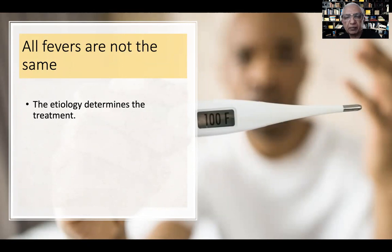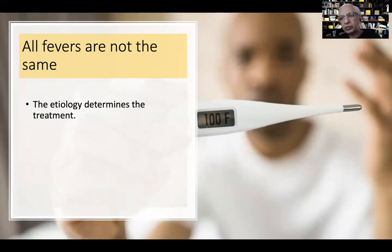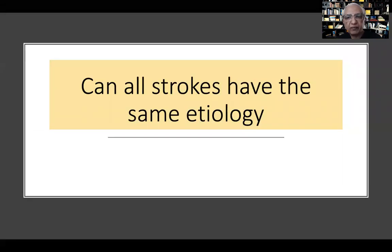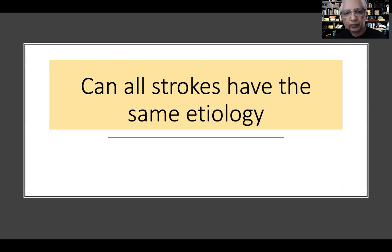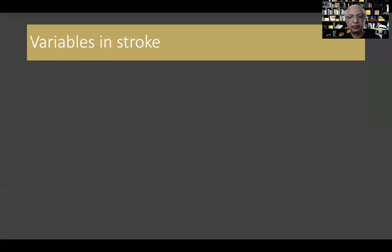For example, a patient with a urinary tract infection, a patient with viral fever, and a patient with fever secondary to a tumor all present with raised temperature, but require different treatments. Similarly, although all present as ischemic strokes, they don't all have the same etiology. If different patients have different etiologies, can we treat everyone the same way?